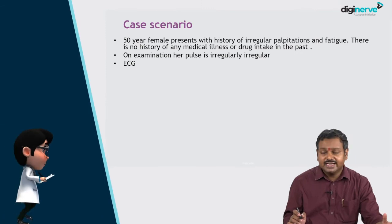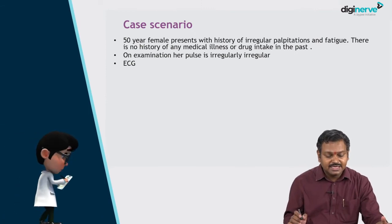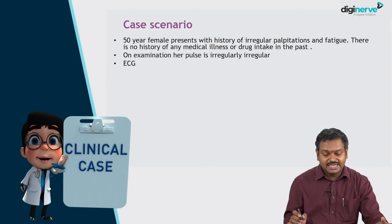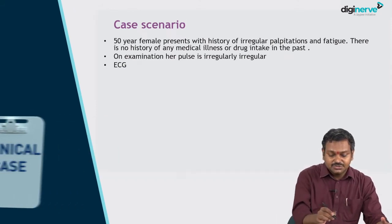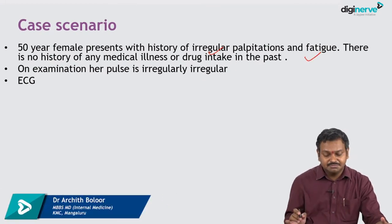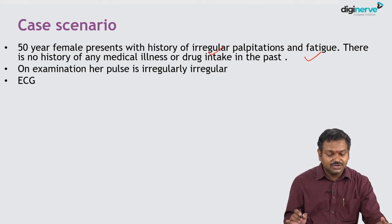In this session, I'll be discussing with the help of a case scenario. A 50-year-old female has come with history of irregular palpitations and fatigue. There is no other significant past medical history or any drug intake in the past.